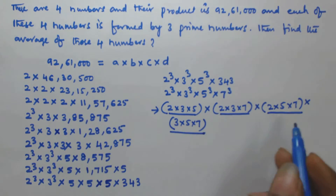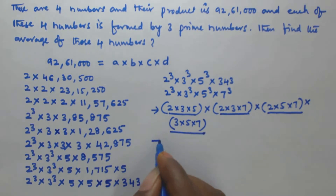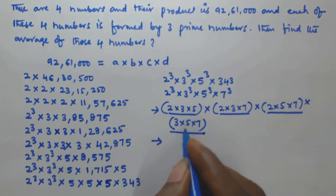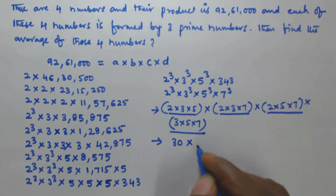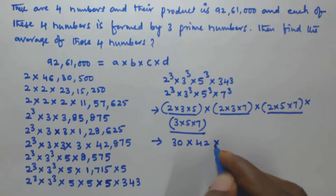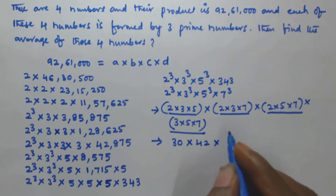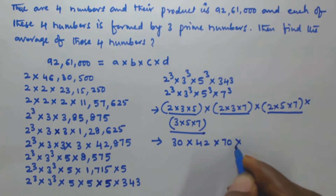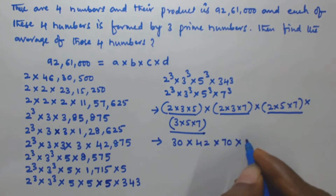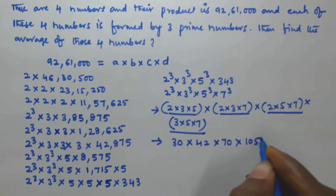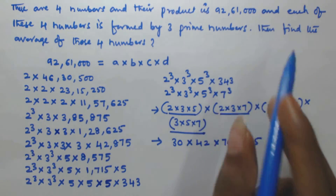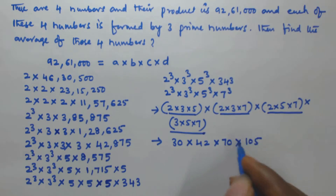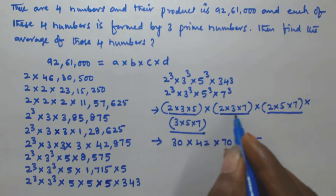So the four numbers are: 2 × 3 × 5 = 30, 2 × 3 × 7 = 42, 2 × 5 × 7 = 70, and 3 × 5 × 7 = 105. These are the four numbers whose product is 92,61,000 and each is formed by 3 prime numbers.